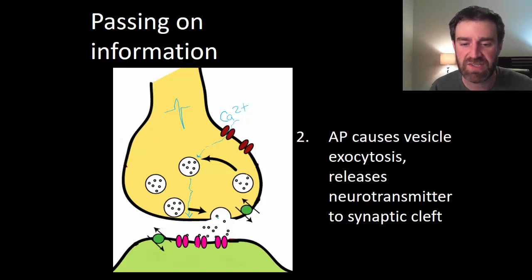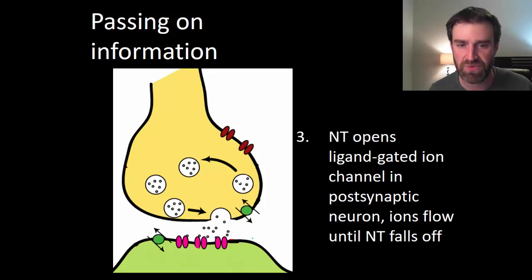And so now the neurotransmitter is in the synaptic cleft, and what it will do is very quickly diffuse over to some ligand-gated ion channels in the next neuron, the postsynaptic neuron, and by binding at those ion channels it changes the shape of those proteins so that they open, and that's going to allow whatever ion those channels let diffuse go in or out, at least until the neurotransmitter falls off.